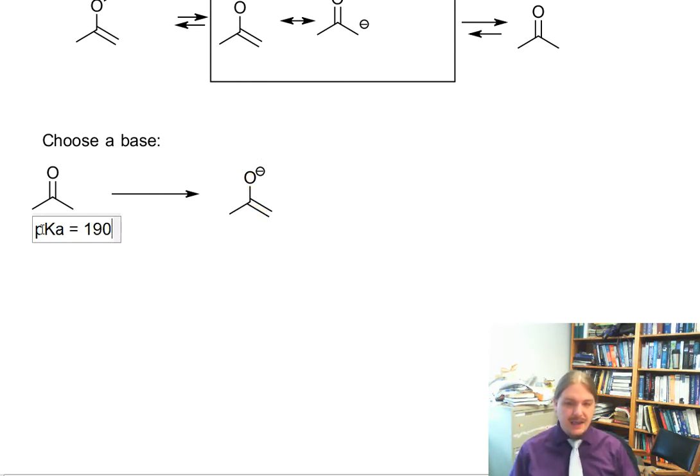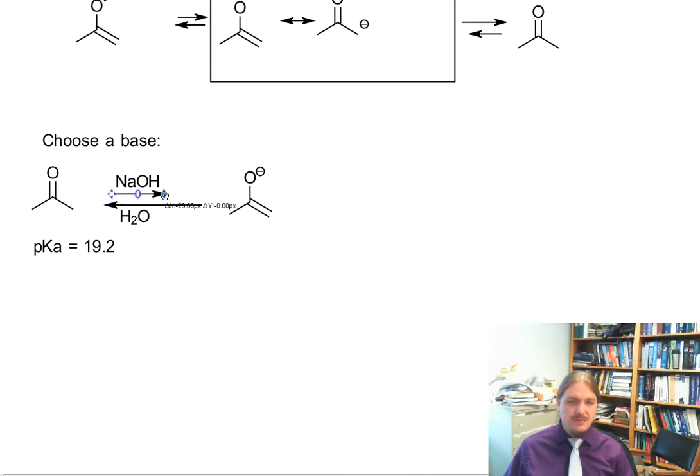If we really want to generate a lot of this enolate, we need to know some acid-base chemistry. For example, the pKa of acetone is 19.2, so we can use that information to choose a base or to make intelligent decisions about the base. If we wanted to use sodium hydroxide and water, we should expect that this equilibrium will favor the ketone form by a fair amount, because the pKa of water is 15.7. So water is a stronger acid than acetone.